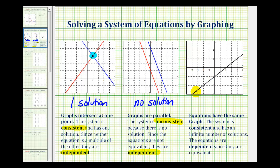And the last possibility is the two lines coincide, or are on top of one another. In this case, we have an infinite number of solutions, and the system is consistent, and the equations are dependent.